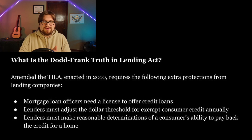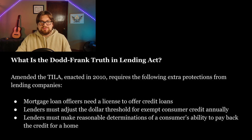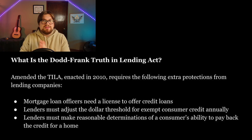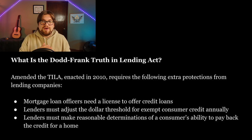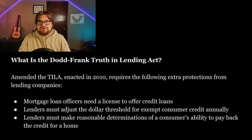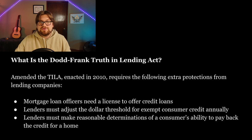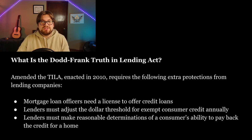There is also the Dodd-Frank Truth in Lending Act — another notable act that amended the Truth in Lending Act. Enacted in 2010, it requires the following extra protections: mortgage loan officers need a license to offer credit loans; lenders must adjust the dollar threshold for exempt consumer credit annually; and lenders must make reasonable determinations of a consumer's ability to pay back the credit of a home.